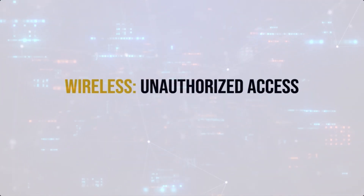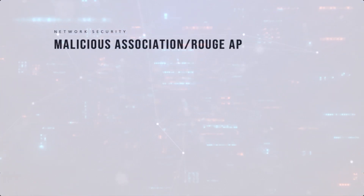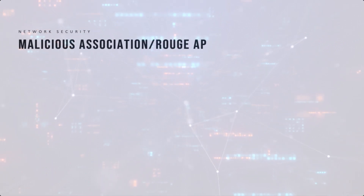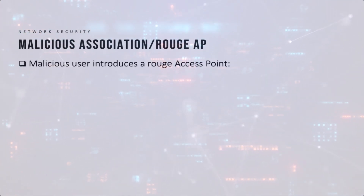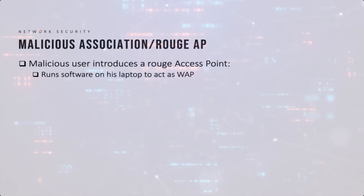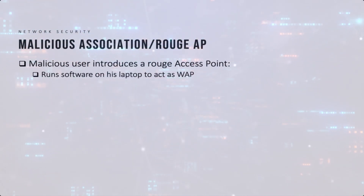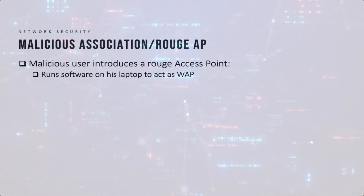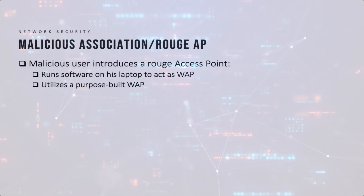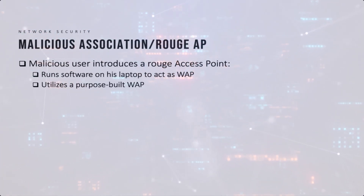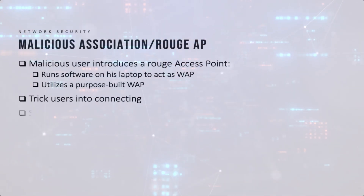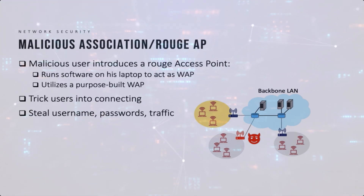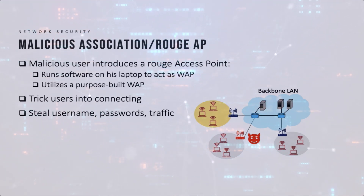Let's discuss unauthorized access challenges in wireless networks. The first challenge is malicious association, or a rogue access point. A malicious insider can connect a rogue access point to the backbone LAN. This access point can be a laptop running specialized software to simulate a wireless access point, or a purpose-built hardware access point. The basic purpose is to trick users into connecting to it so the malicious user can steal usernames, passwords, and traffic.